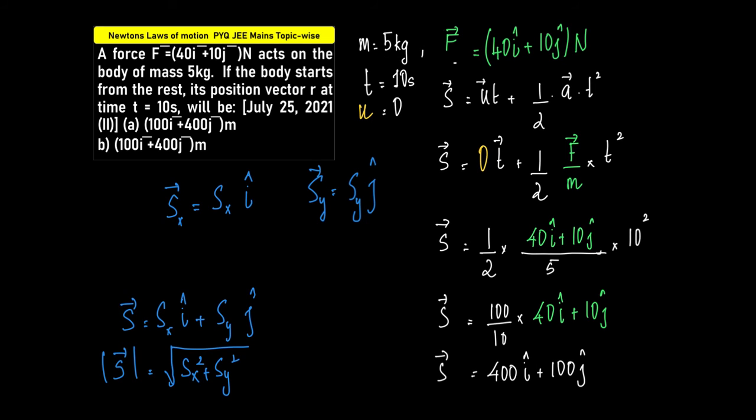Displacement vector S is equal to 400i plus 100j. I don't think I have all the options here. The correct option would be 400i plus 100j.